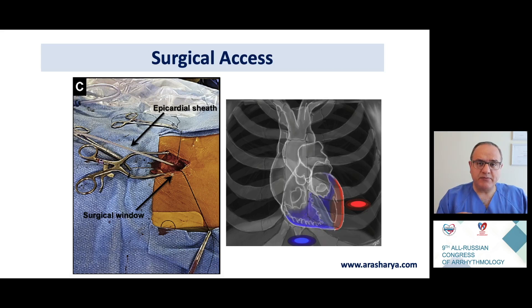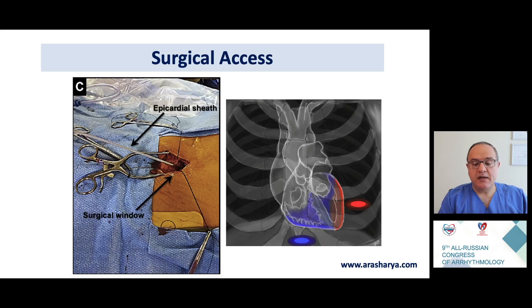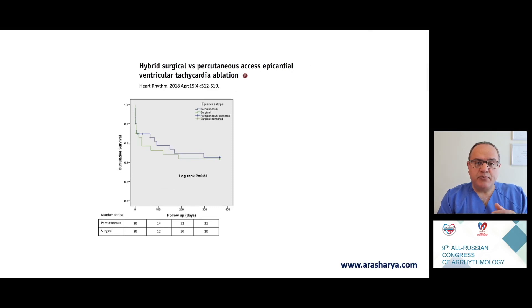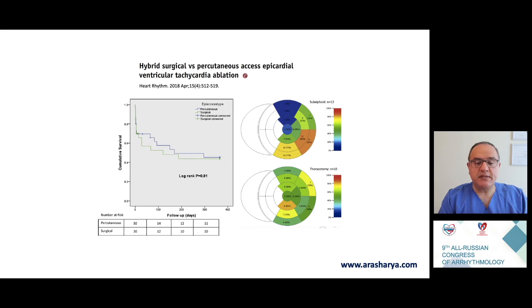Before surgical access, we perform CT imaging and analyze the pictures with surgeons to decide which access is best for the patient and best suited to reach the site of VT origin. Importantly, a study of 60 patients showed that interventional and surgical epicardial access yielded the same outcome, meaning the access method does not influence the catheter ablation outcome.